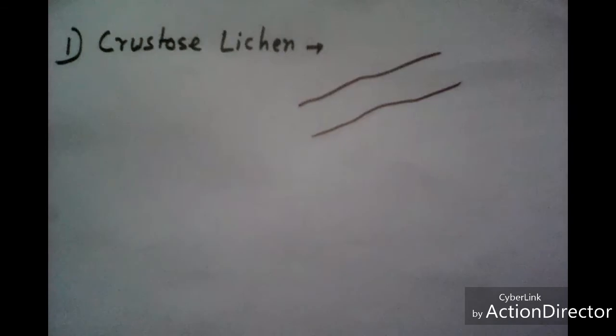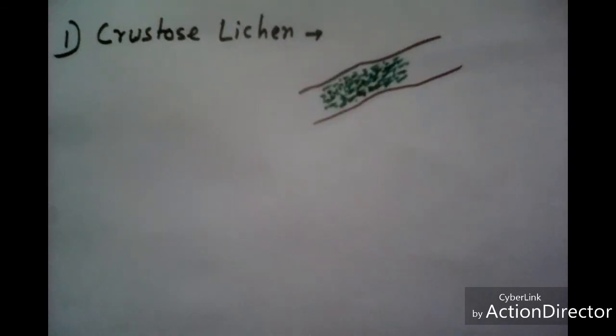First type is crustose lichen. This type of thallus produces a thin layer on the substratum and this thallus is tightly attached with the substratum, so we can't separate it from the substratum.